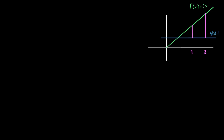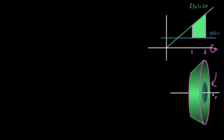In this video we're going to learn the washer method and do our first example. The setup is we have two functions f(x) = 2x and g(x) = 1, and two vertical lines at x = 1 and x = 2, and together they trap some area. We're going to take that area and rotate it around the x-axis, and when we do that we wind up with a solid shape. Notice that there's a hole in this shape because there's a gap between this area and the axis of rotation, so when we rotate around the x-axis that gap leaves a hole in the solid.